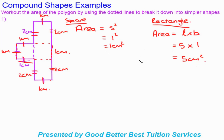Just to recap: we used the dashed lines to break the compound shape down into a rectangle and a square, worked out the area for each one separately, and used the given measurements to find the length of the rectangle.